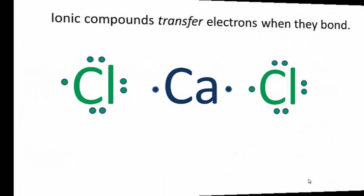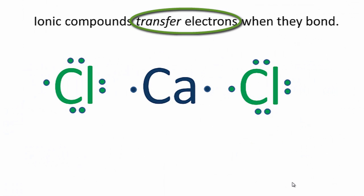For ionic compounds, we're going to transfer electrons when they form their chemical bonds. So we have the calcium in the center, it has 2 valence electrons, and then on either side we have a chlorine atom. Each one of those has 7 valence electrons.